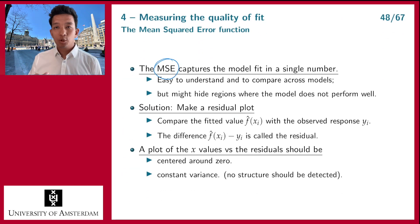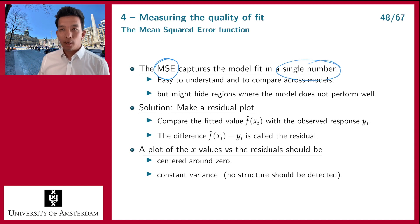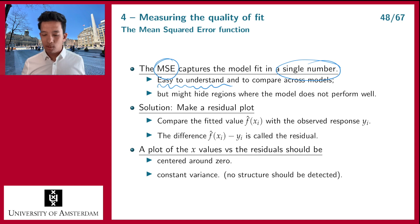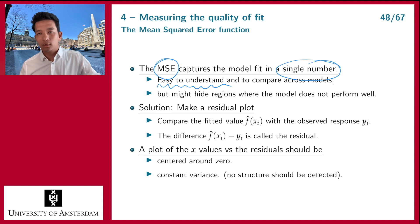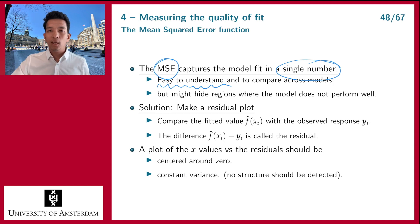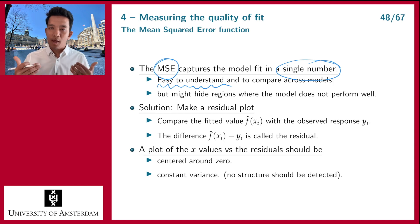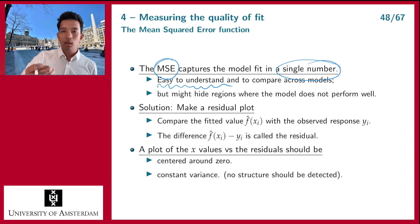The MSE captures your model fit in a single number, and therefore it is a measure that is very easy to use and easy to understand. If you have two models, you calculate the MSE for each and pick the model with the smallest MSE — very simple. The only thing you have to take care of is that your MSE should not be too small, because then you are starting to predict the error term, and that will cause problems. But in general, you take the model with the smallest MSE. However, the MSE captures the whole fit in a single number, meaning you cannot distinguish regions where the fit is very good from regions where the fit is very bad — the MSE gives you an average number.